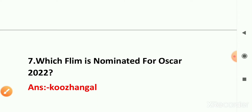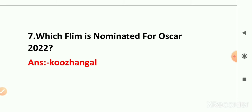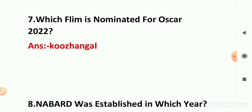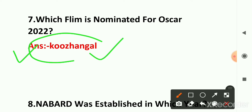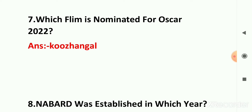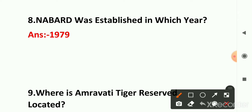Question number seven: which film was nominated for Oscar 2022? Koozhangal is the right answer. If your option is Koozhangal, then it is the right answer. Question number eight was also asked about what was established in 1979.